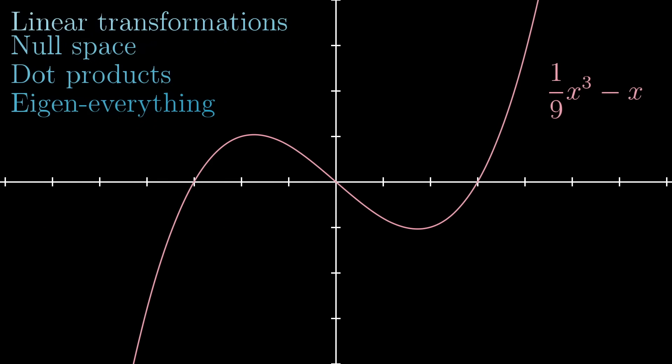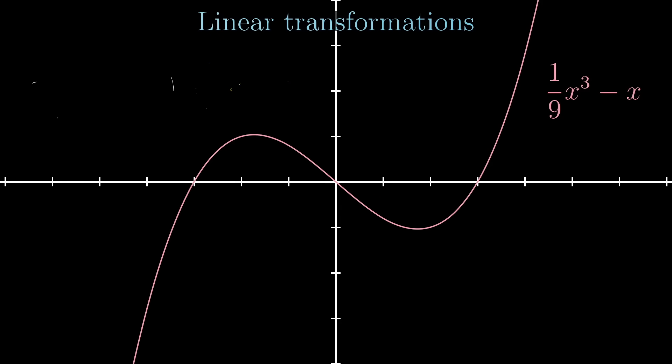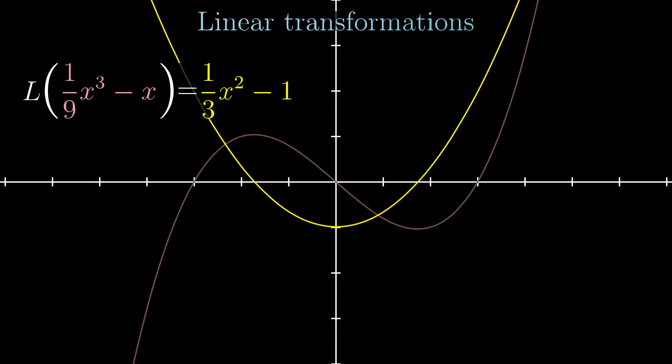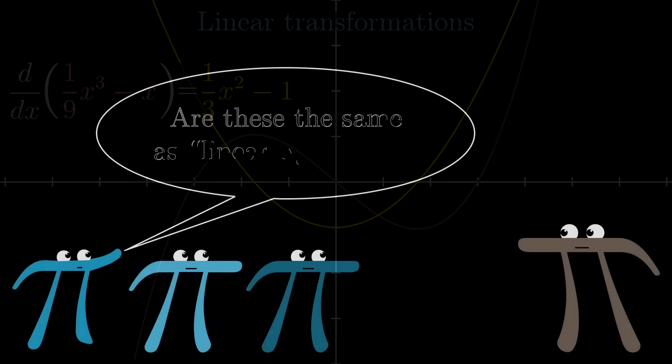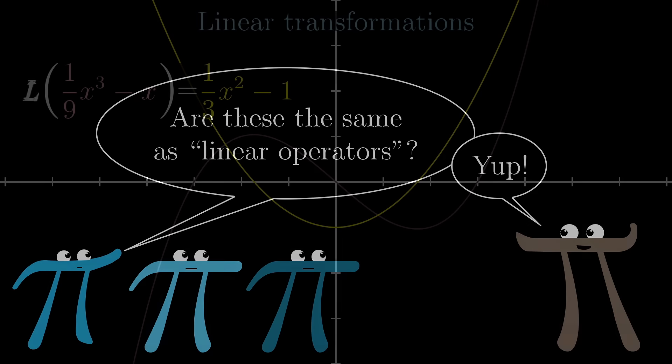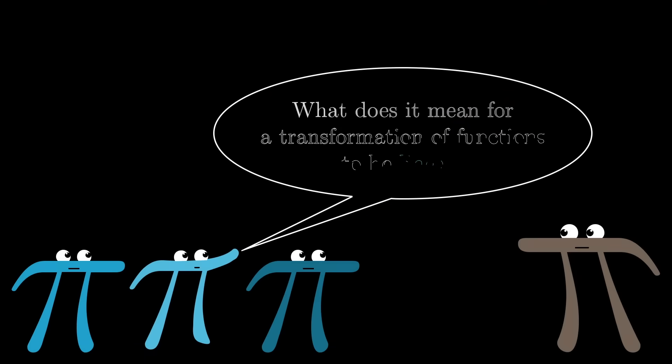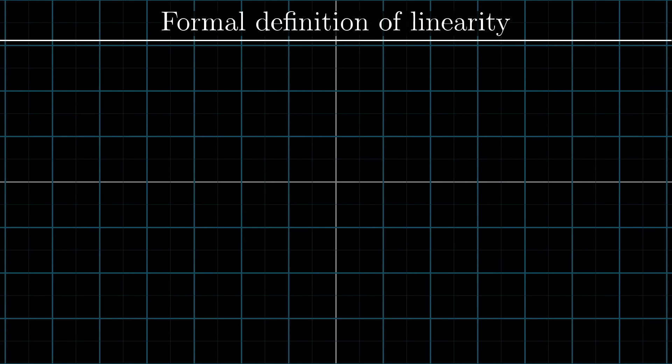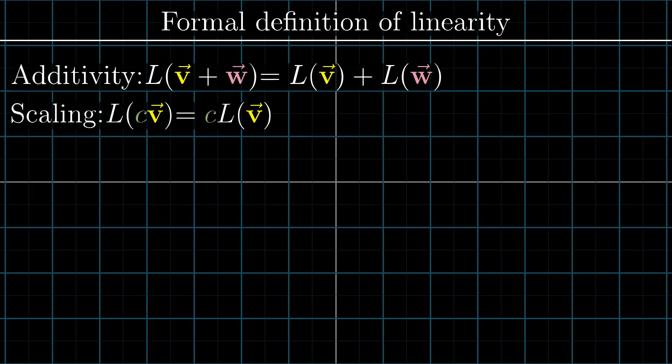For example, there's a perfectly reasonable notion of a linear transformation for functions, something that takes in one function and turns it into another. One familiar example comes from calculus, the derivative. It's something which transforms one function into another function. Sometimes, in this context, you'll hear these called operators instead of transformations, but the meaning is the same. A natural question you might want to ask is what it means for a transformation of functions to be linear. The formal definition of linearity is relatively abstract and symbolically driven compared to the way that I first talked about it in Chapter 3 of this series. But the reward of abstractness is that we'll get something general enough to apply to functions as well as arrows.